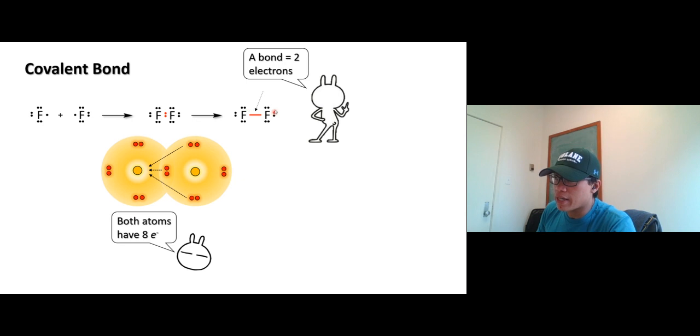And the electrons outside right here, they come in pairs, so we call them a lone pair. Lone pair, unshare electrons. We can call all those name. I usually call them lone pair.